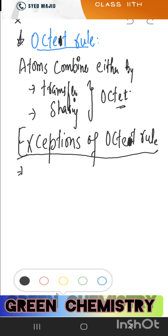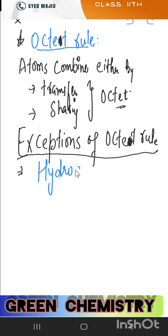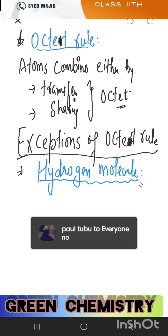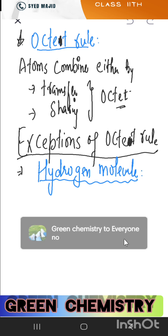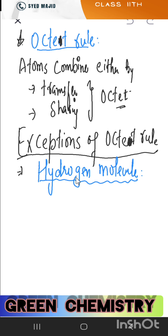First exception: the hydrogen molecule case. In the hydrogen molecule, the octet rule is not followed — instead, the duplet rule applies. Hydrogen completes a duplet with just two electrons, one from each atom. So hydrogen molecule is the first exception to the octet rule.